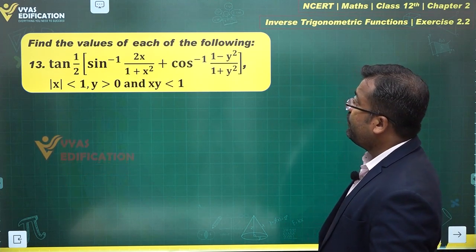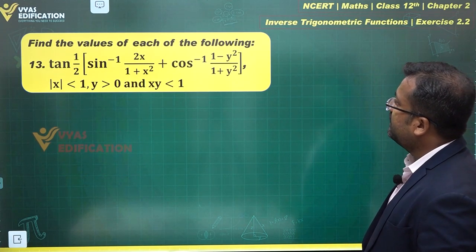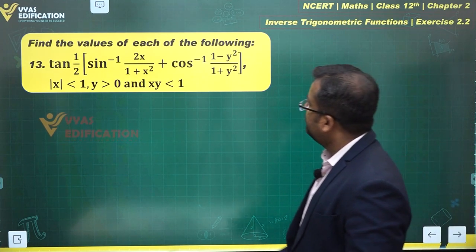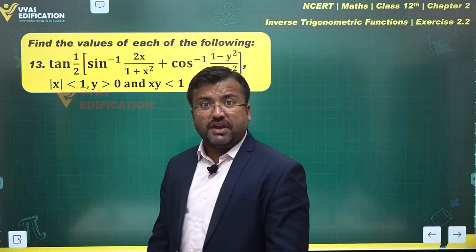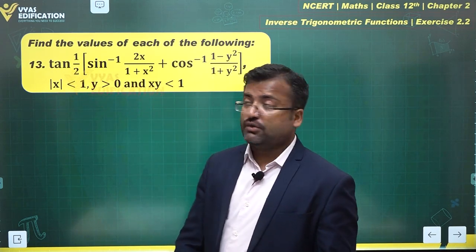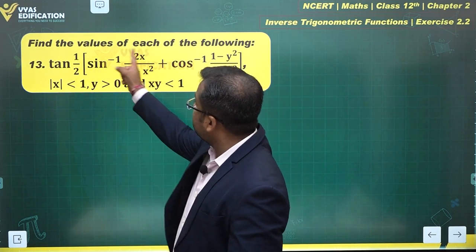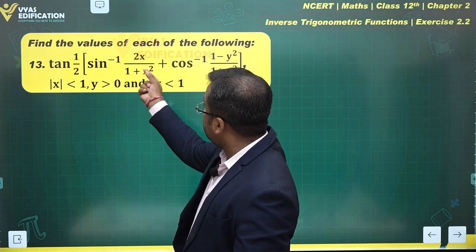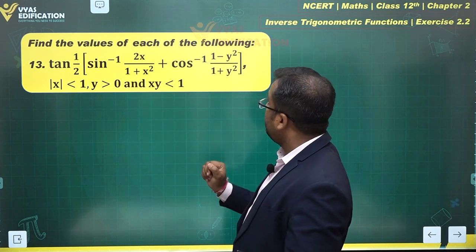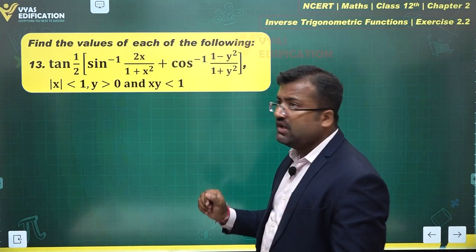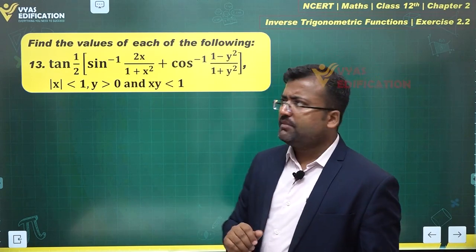Let's try to simplify and find the values of each of the following. This looks pretty big, but we observe that we have sin inverse of 2x/(1+x²) and cos inverse of (1-y²)/(1+y²). These are of a particular form that we need to recognize.